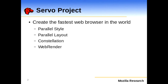Yesterday, if you were in this room in the morning, you heard Jack Moffitt talk about the Servo project. Servo is an effort at Mozilla to create the world's fastest web browser. The way we're trying to do that is by taking core browser technologies and parallelizing them to take advantage of all the parallel capabilities of the computer — for example, taking CSS style parsing and making that work with multi-core, doing parallel layout, and putting multiple processors in use so different tabs have different JavaScript back-end processes.